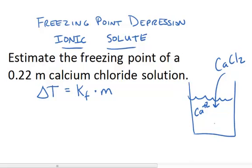And in this case, you'll have calcium ions. And for every one calcium ion that dissolves, you have two chloride anions.